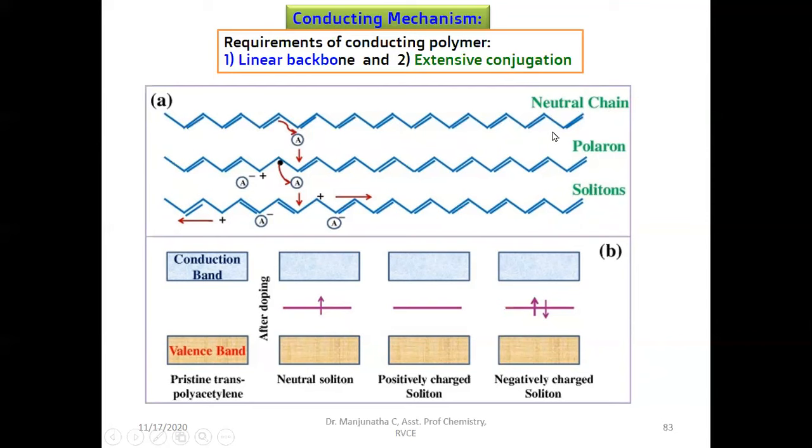What is charge? Either it should create positive charge or electron, negative charge. For that, you can add oxidizing agent or reducing agent. If you add oxidizing agent, it takes out one electron from the polymer and creates positive charge, called acceptor. Or if you add donors, reducing agent, they add electron to that system and create negative charge.